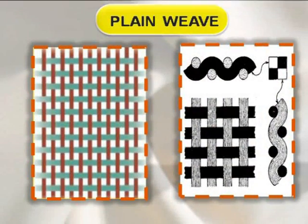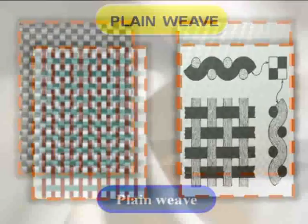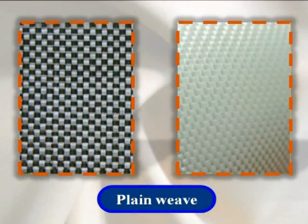Plain weave. Plain weave is the simplest form of interlacing and can be generated with only two harnesses.